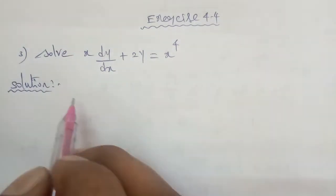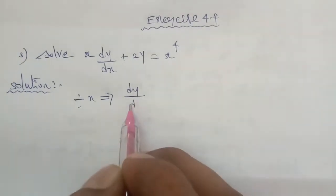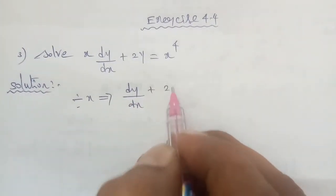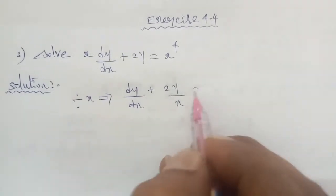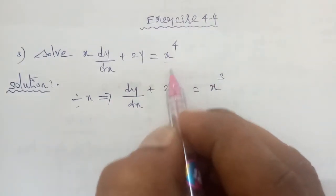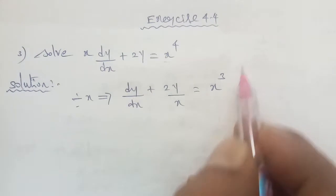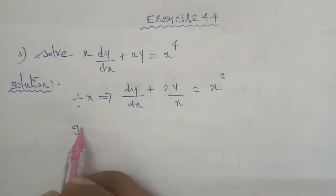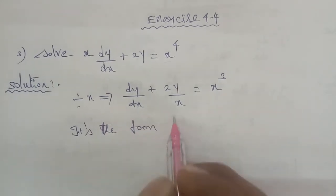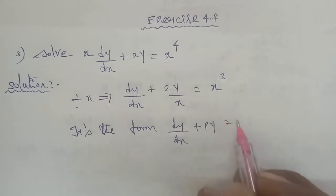So the question is, if you want to divide the equation, that is dy/dx — x by x cancel — so 2y by x remains, and x power 4 by x cancel gives x power cube. So again in the format, it is the form of dy/dx plus py equal to q format.